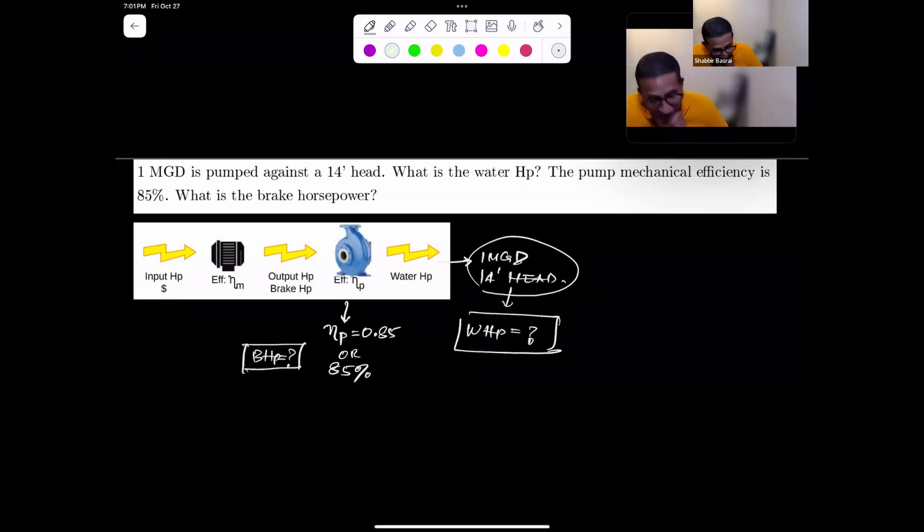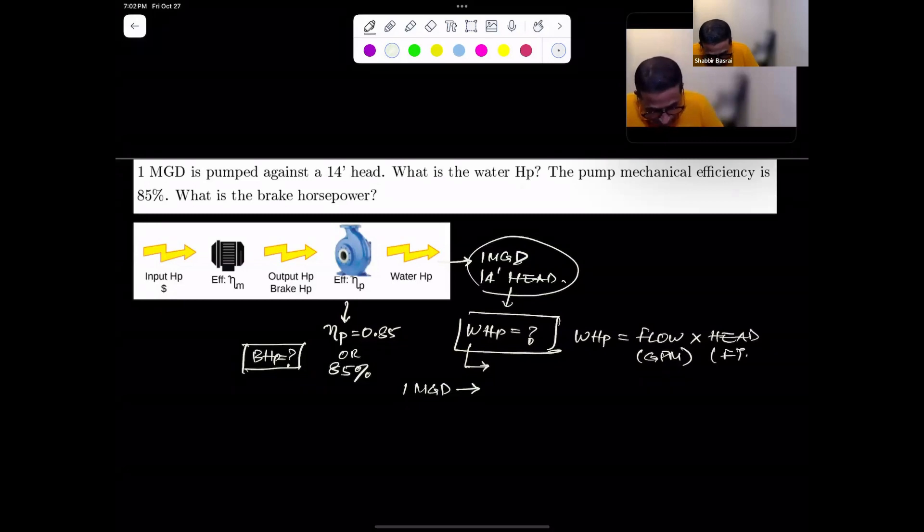In this particular case, we know the water horsepower is basically a product of your GPM times the head. Here you have a flow of one MGD, but you need the flow in GPM. Most important is that you need to write down the formula. Your water horsepower is equal to the flow in GPM times the head in feet.